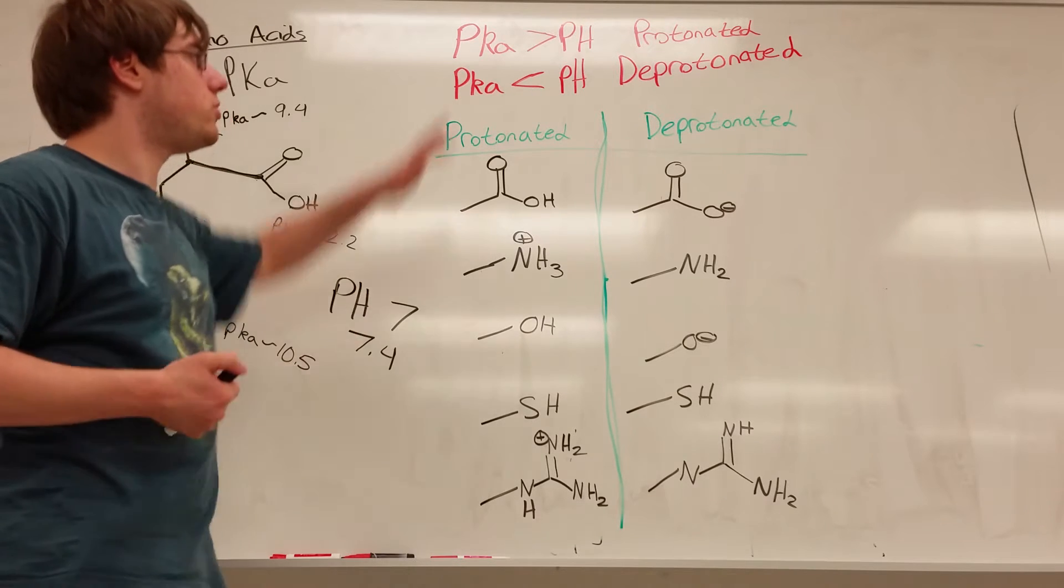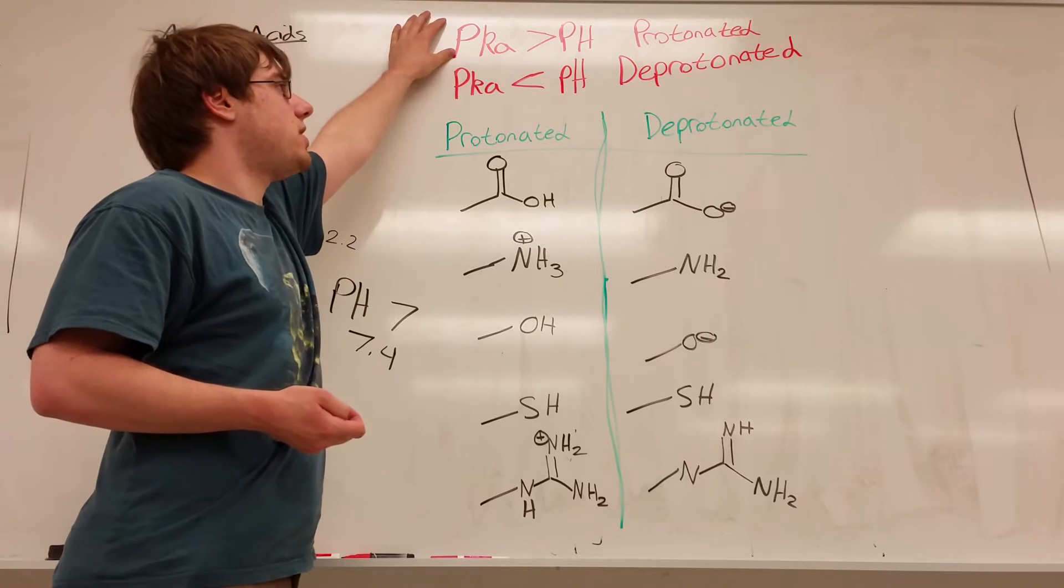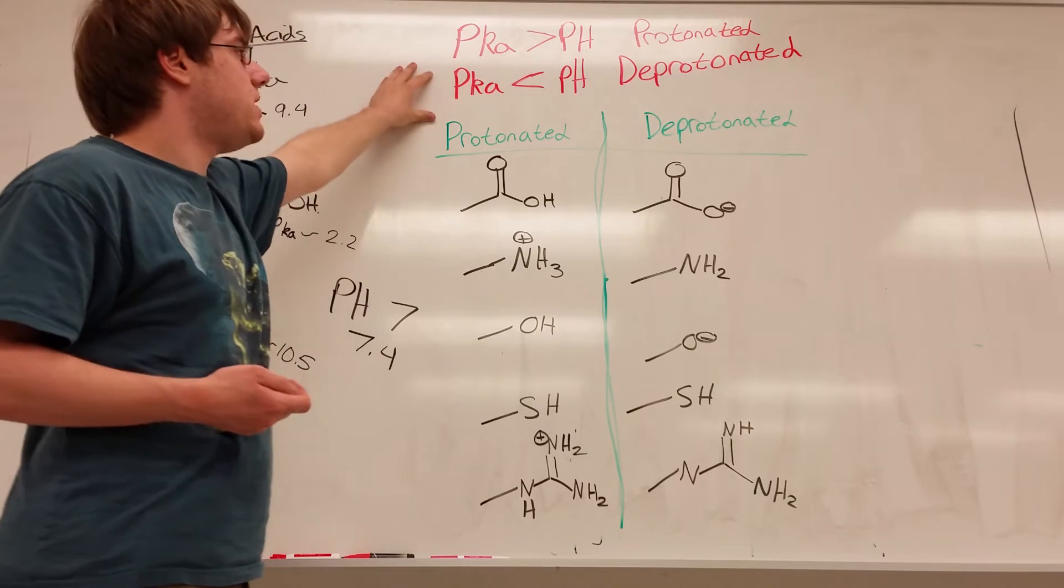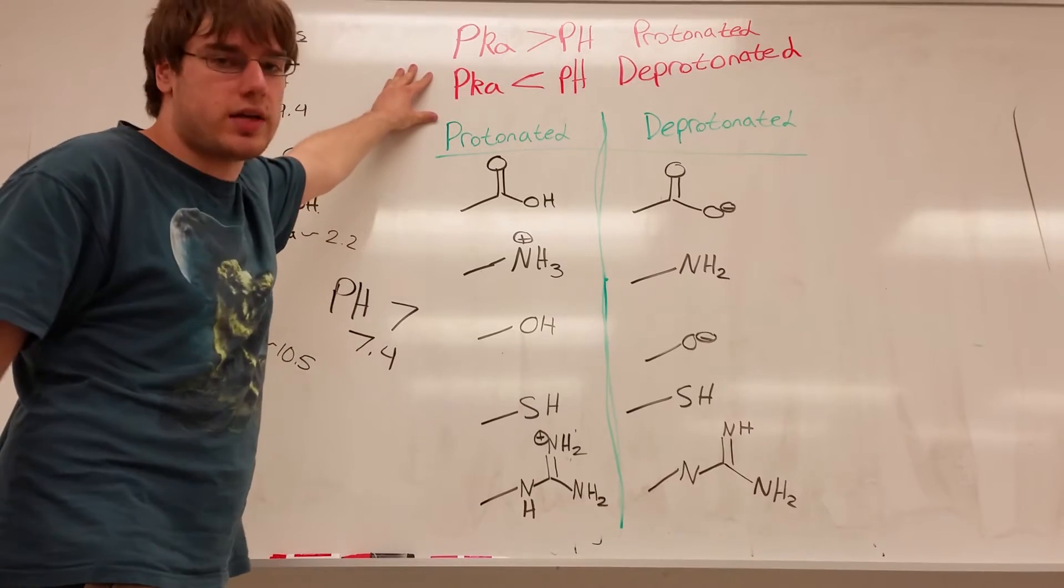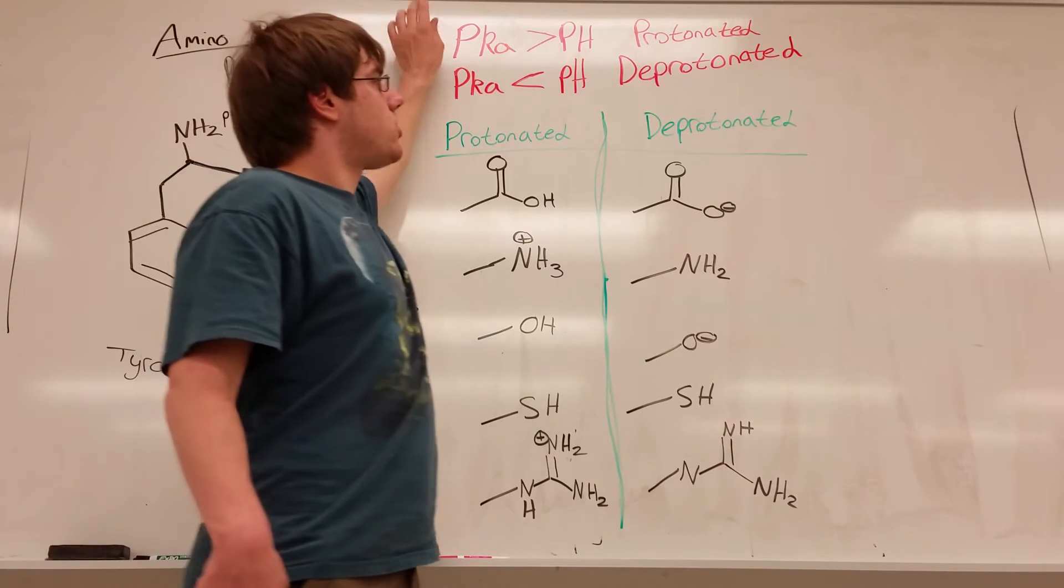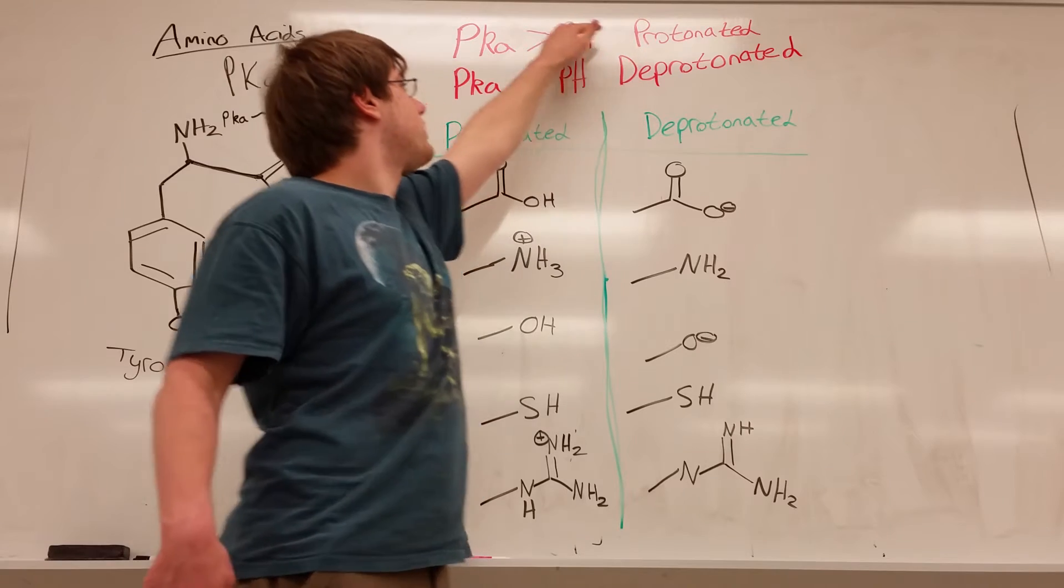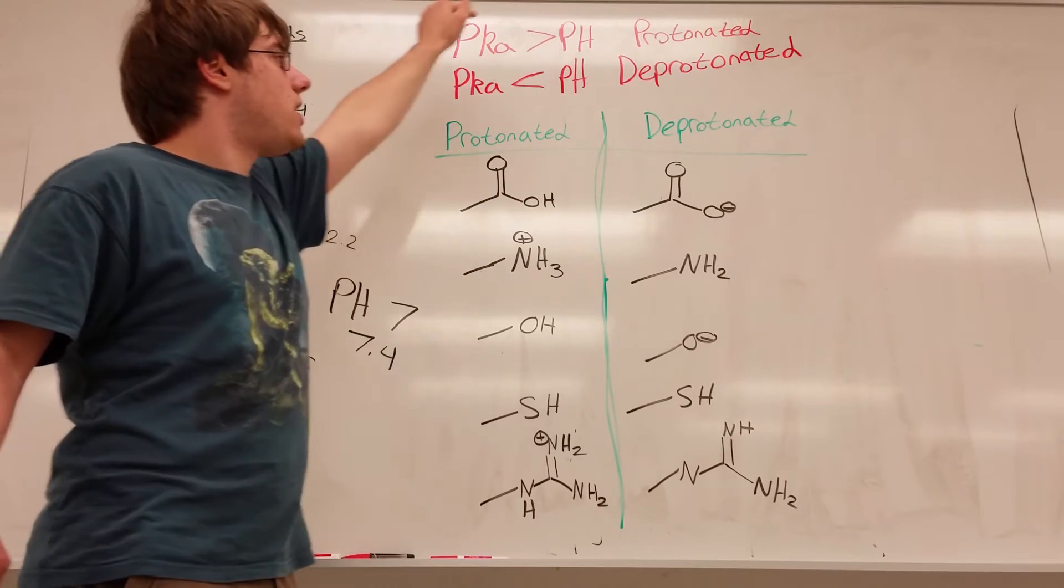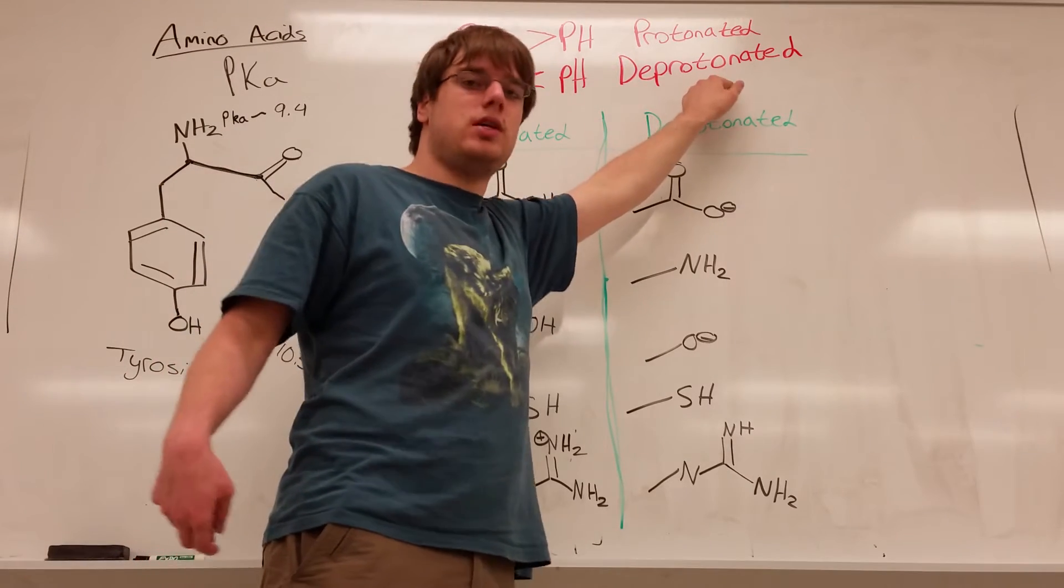So now let's take a look at what we have to do for this. The first step you do is you go to this chart, and you say, okay, is my pKa greater than my pH, or is my pKa of my individual functional group less than my pH? Well, if the pKa is greater, the structure will be in its protonated form. And if the pKa is less, then the structure will be in its deprotonated form.